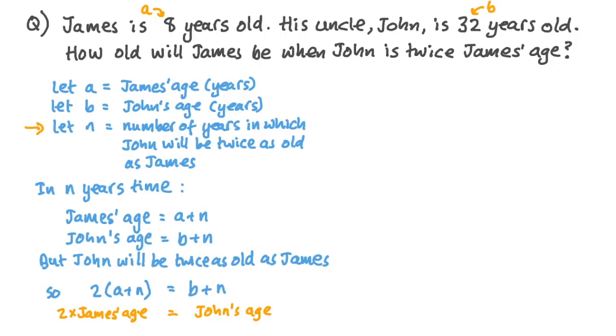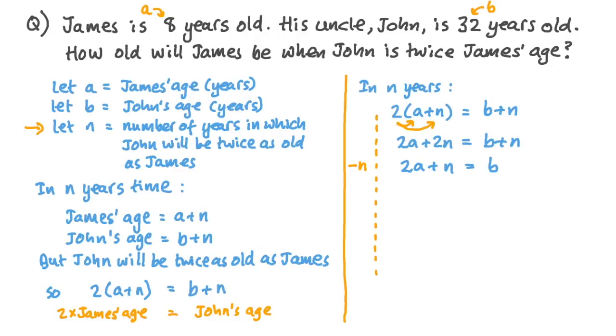Now we can carry out some algebraic manipulation to work out how many years must pass before John is twice James's age, and how old James will be at that time. So we know that in N years, 2 times A plus N is equal to B plus N. So multiplying the 2 by the parentheses on the left-hand side of the equation using the distributive property gives us 2A plus 2N is equal to B plus N. Then subtracting N from both sides of the equation leaves us with 2A plus N is equal to just B. And finally, subtracting 2A from each side gives us an expression for N in terms of A and B.